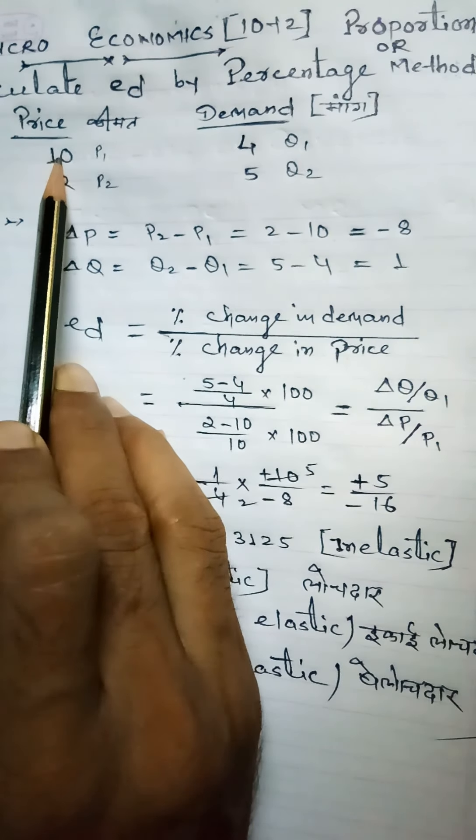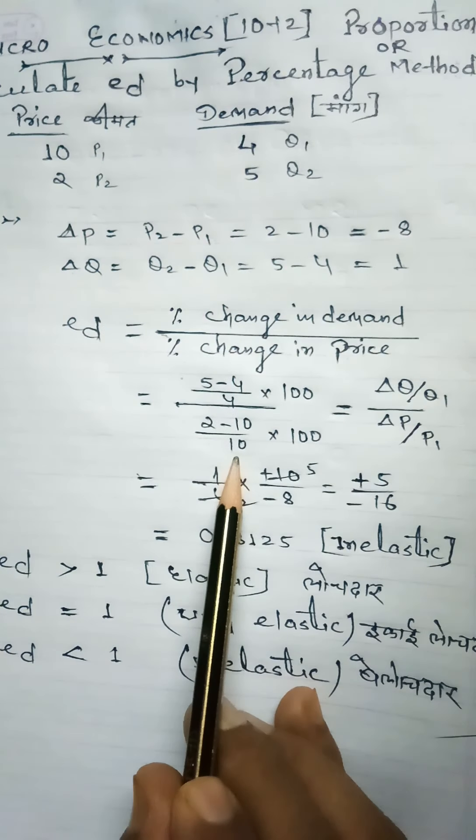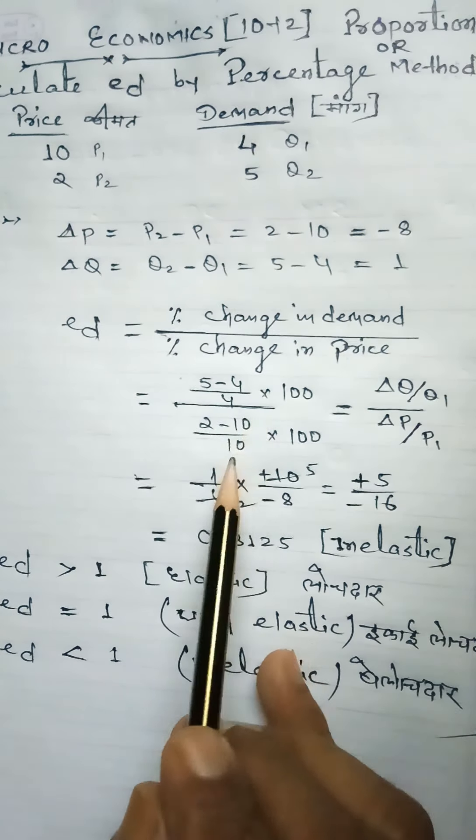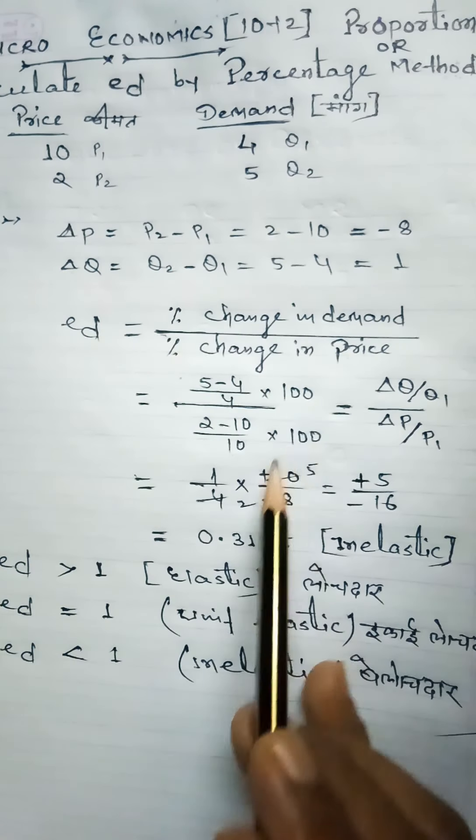2 minus 10, when price changes from 10, it's divided by 10 times 100. The 100s cancel out.